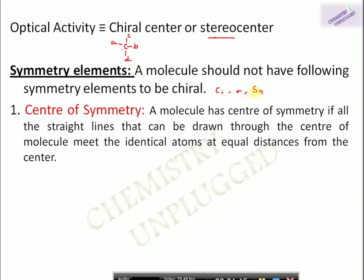If a molecule has any one of these symmetry elements it will be achiral. So to be chiral it should not have these symmetry elements. First is center of symmetry — a molecule has a center of symmetry if all straight lines that can be drawn through the center of the molecule meet identical atoms at equal distances from the center.